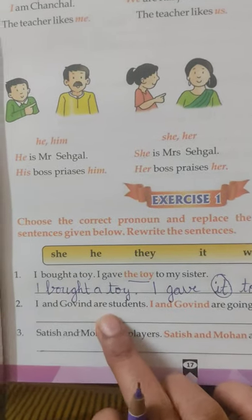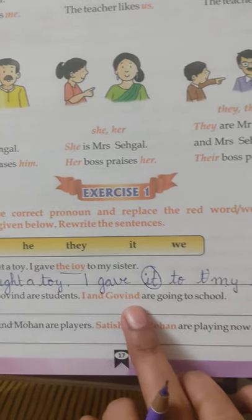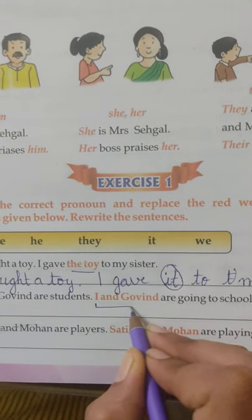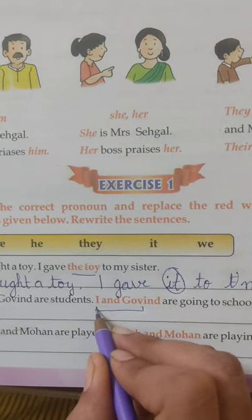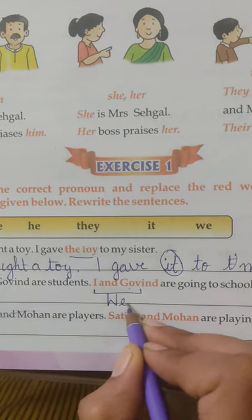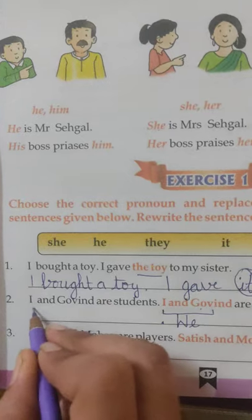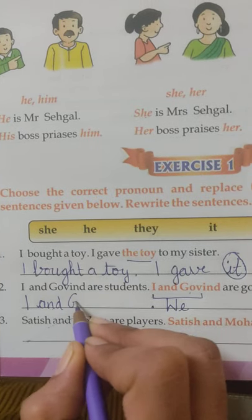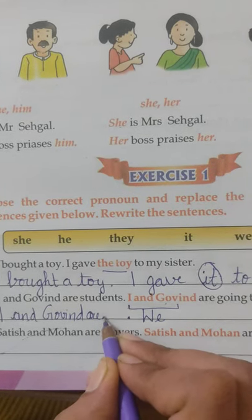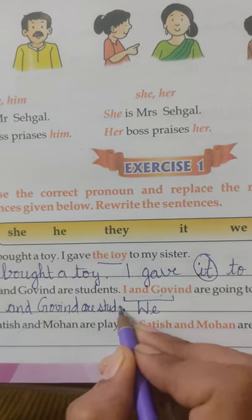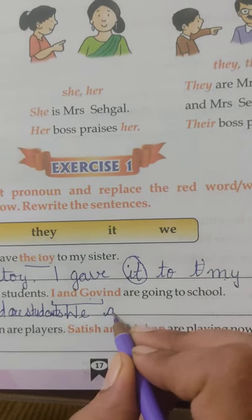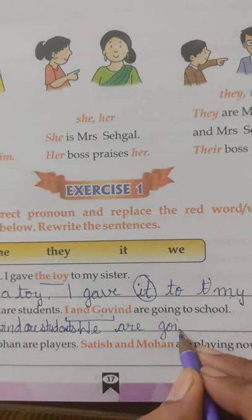Next: I and Govind are students. I and Govind are going to school. This sentence includes the speaker and one more person, so we use 'we'. The first sentence stays: I and Govind are students. The second becomes: We are going to school.